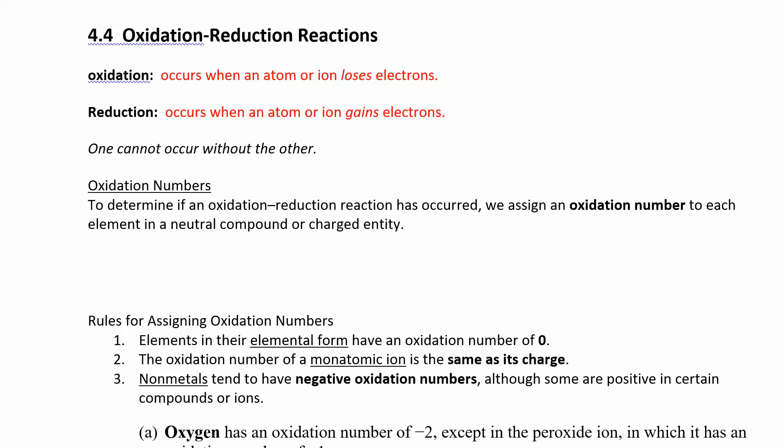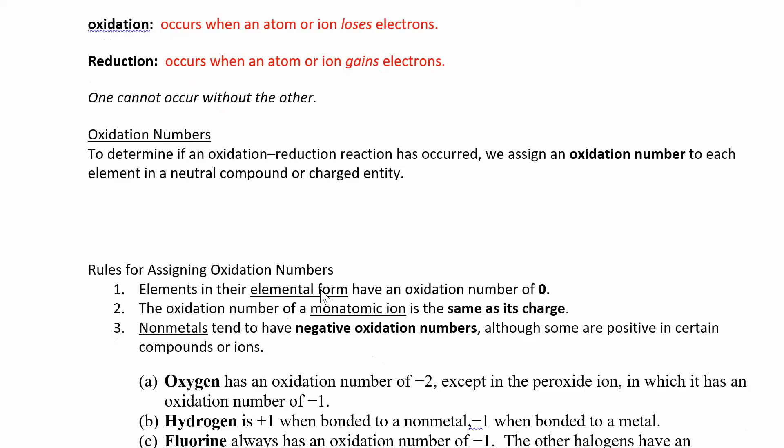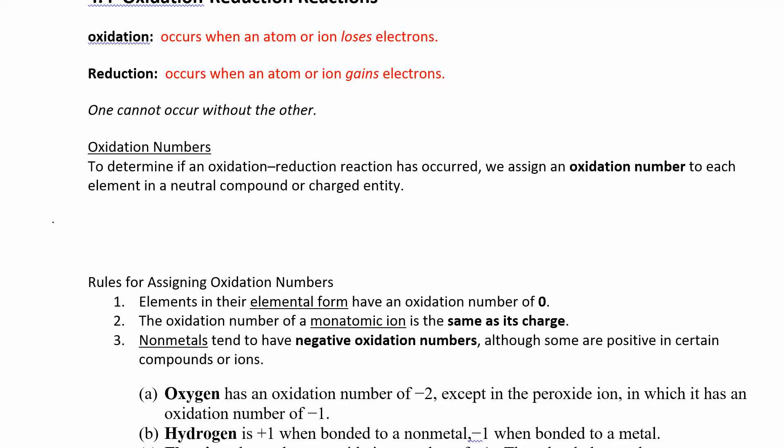Assigning oxidation numbers is a really good way to keep track of who's gaining electrons and who's losing electrons. We're going to go over some rules on how to determine oxidation numbers. If you want to know if an oxidation-reduction reaction occurred, you can assign the oxidation numbers for each species and see how they're changing — or if they're changing. If they don't change, then a redox reaction didn't occur.